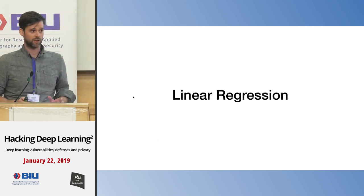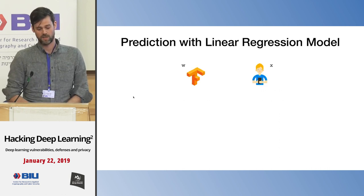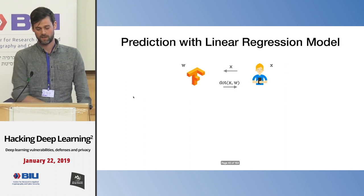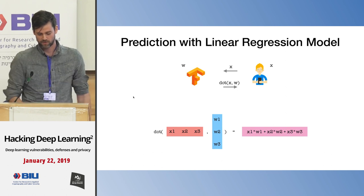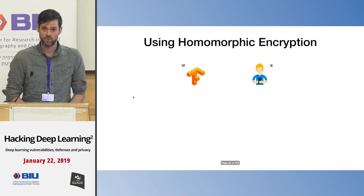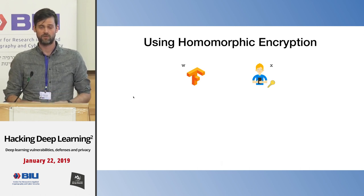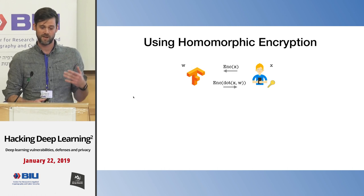To get started, let's look at very simple models — linear regression, specifically prediction using linear regression. We have a model with weights W, a client with a new prediction input X, who wants to send this to the service and get back the dot product. The dot product is just pointwise multiplication followed by addition. If we want to do this using homomorphic encryption, the user picks a decryption key only he knows, with a corresponding public encryption key. He sends the encryption to the service, which runs the prediction and generates an encryption of the dot product, sending it back to the client who decrypts.